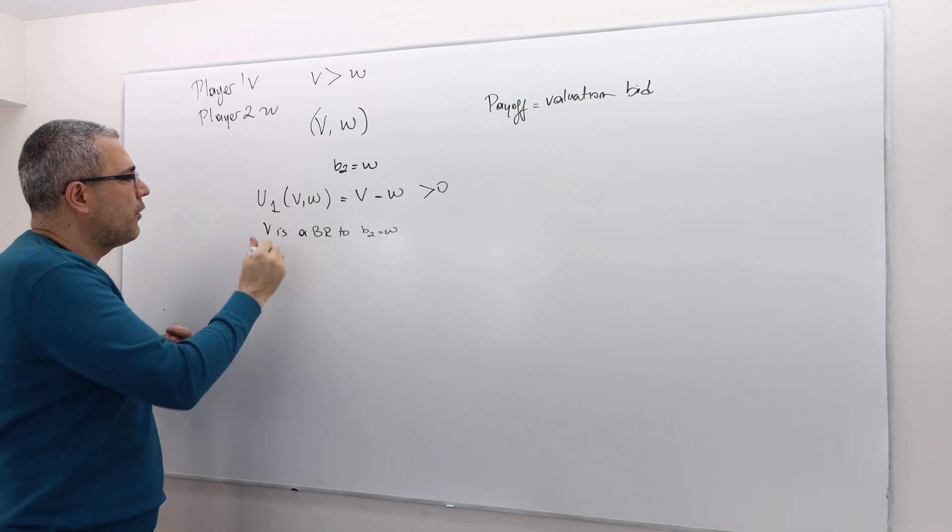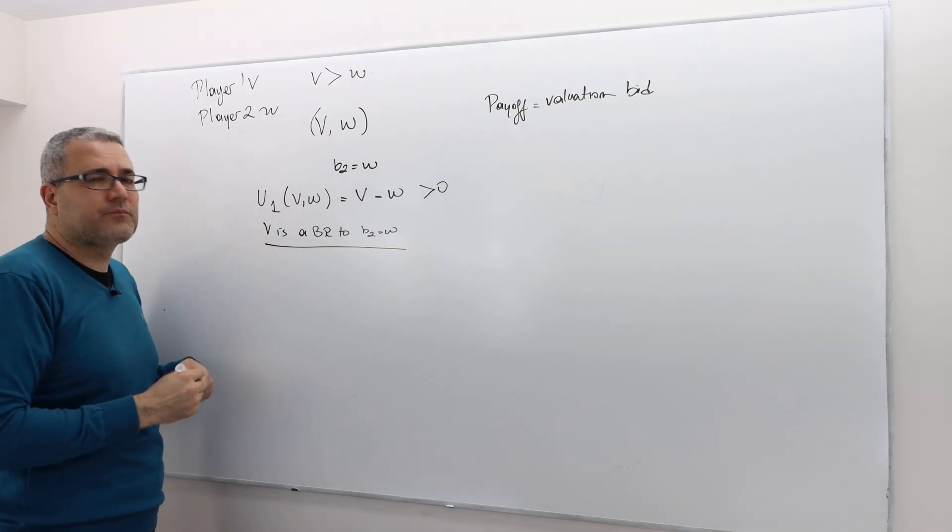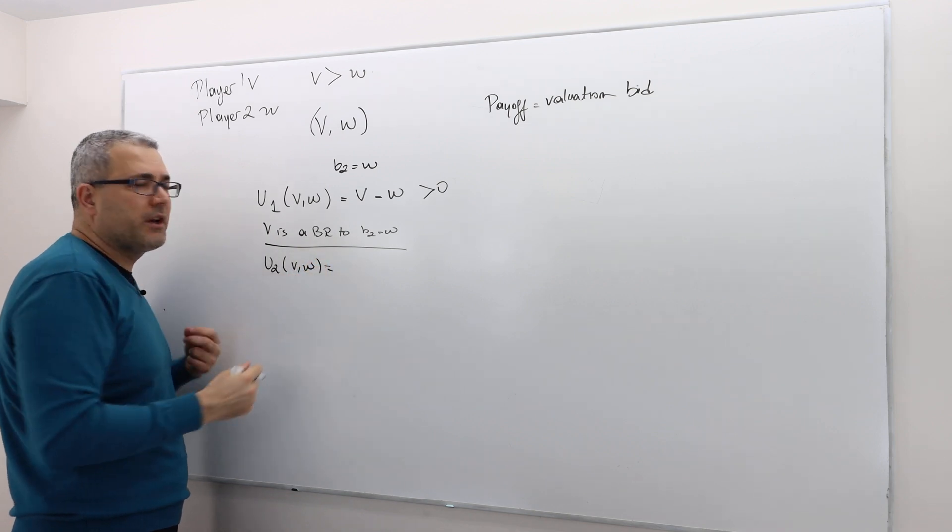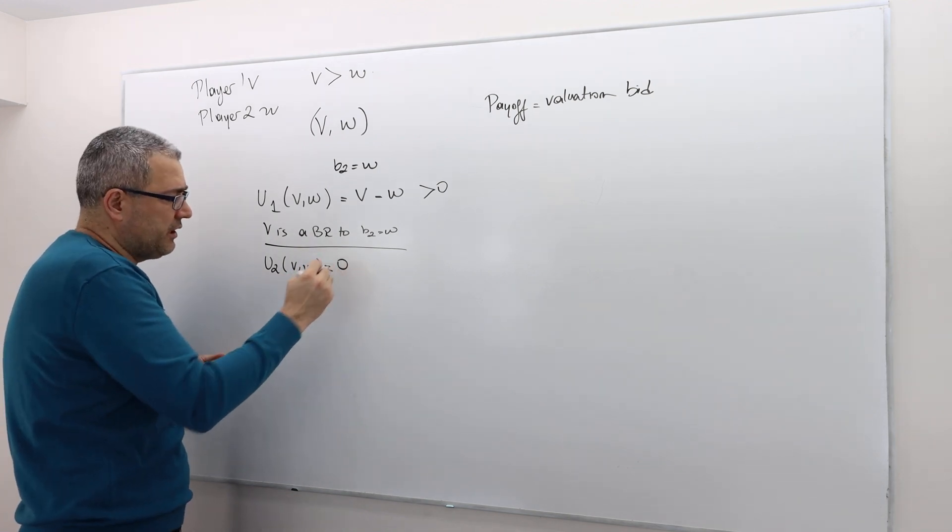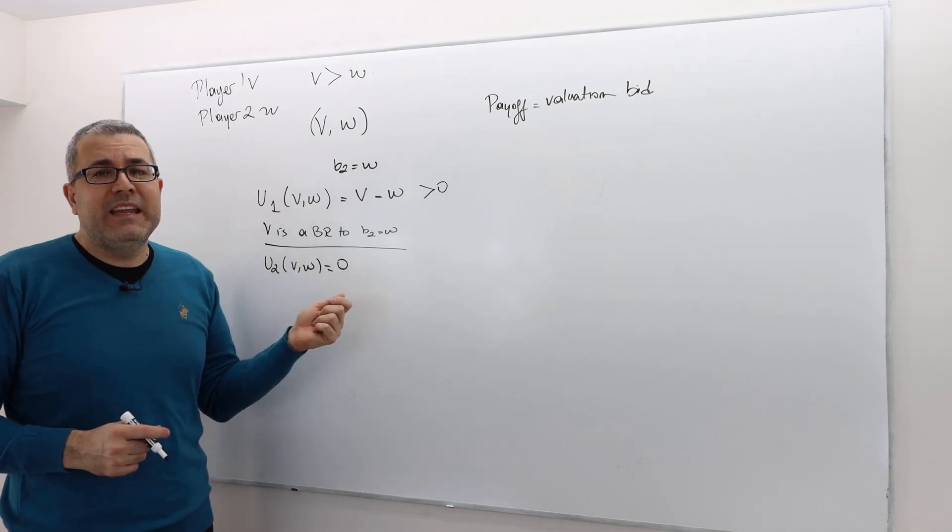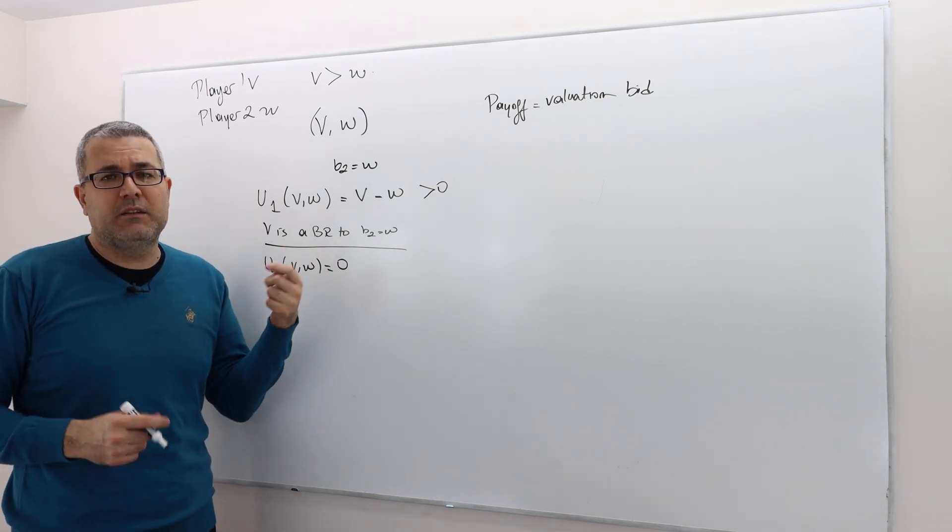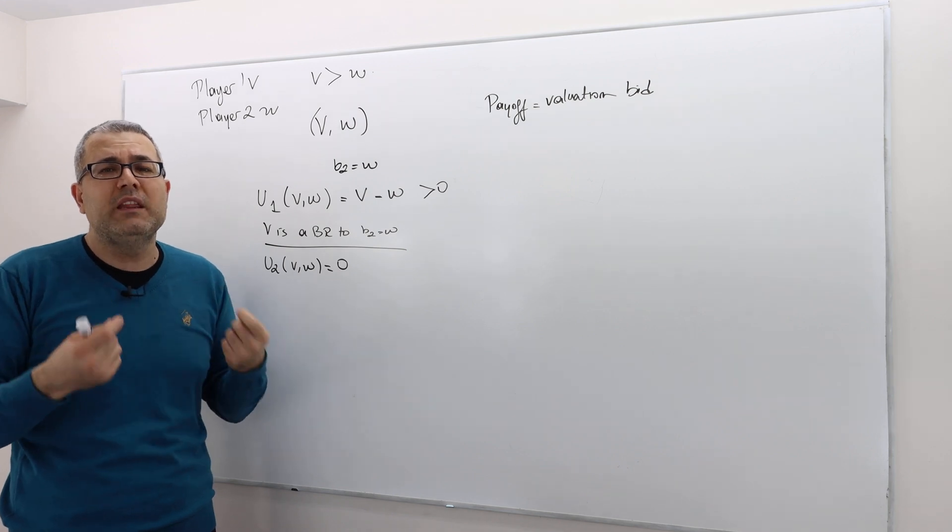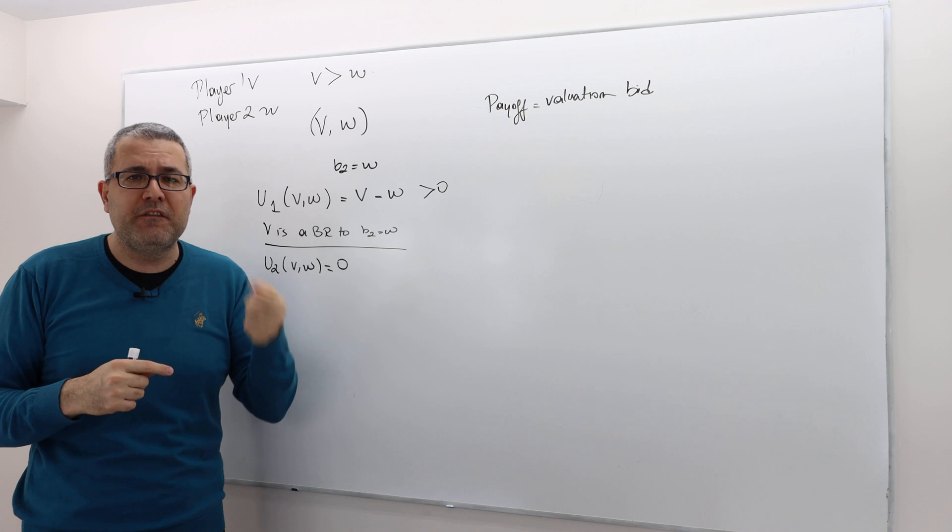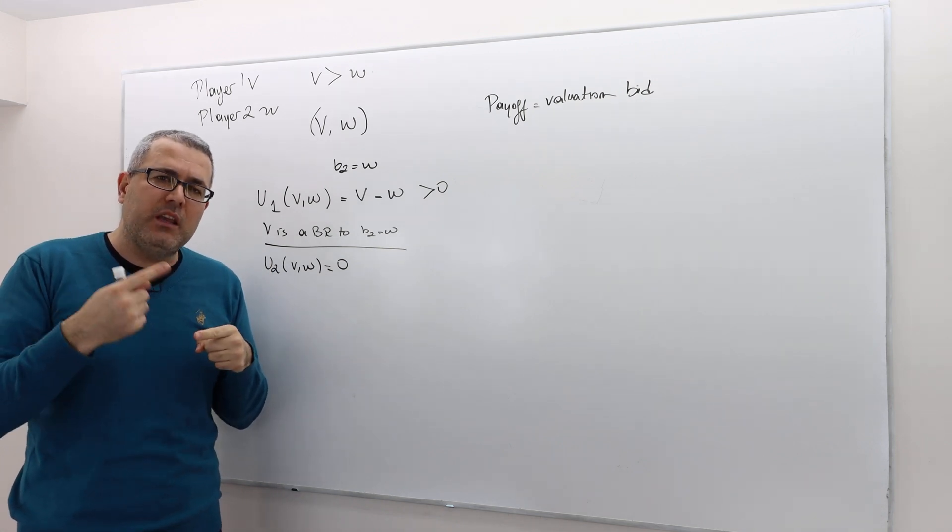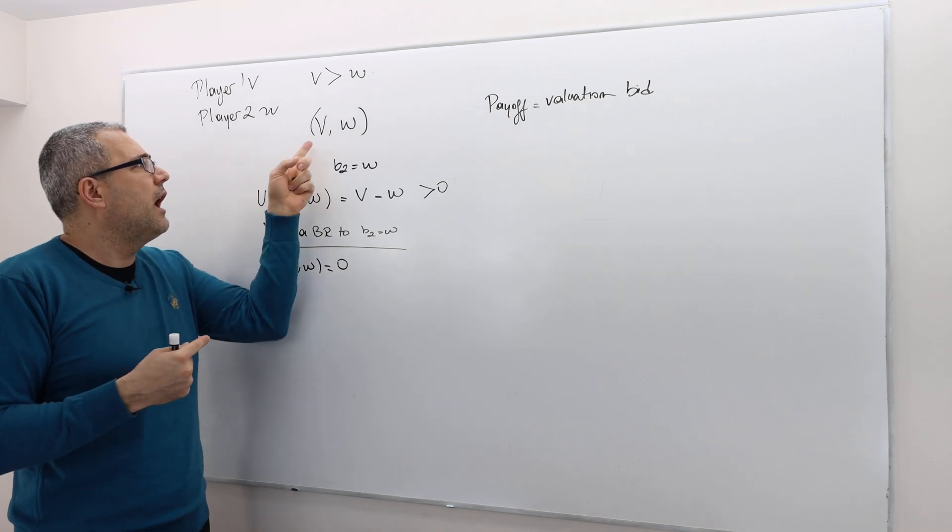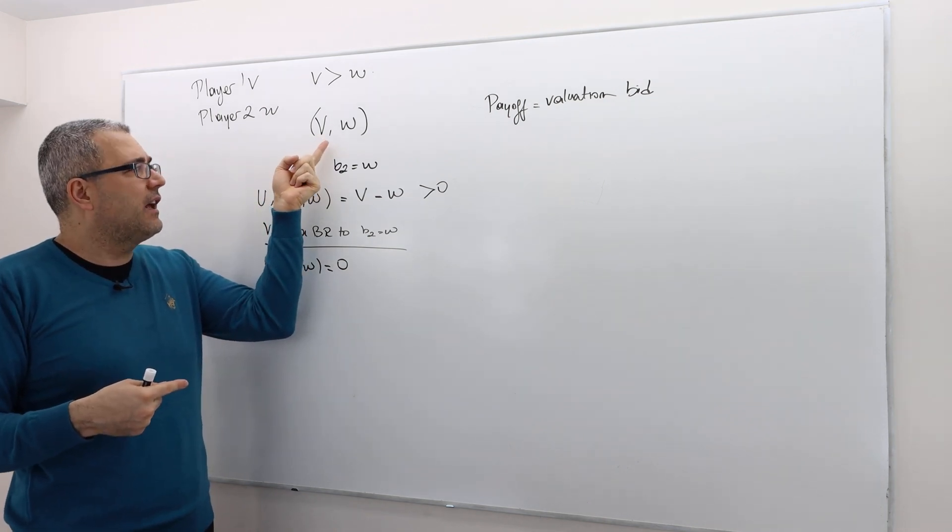If you do the same thing from the second player's perspective, obviously, the first thing you should do is, what is the payoff of player two? Well, zero, because he lost the auction. Can he achieve higher than that? Meaning, can he win this auction? Again, don't forget, given that his opponent is bidding V, he can win the auction if he overbids his opponent, according to the rules. And overbidding means player two must bid something more than V.